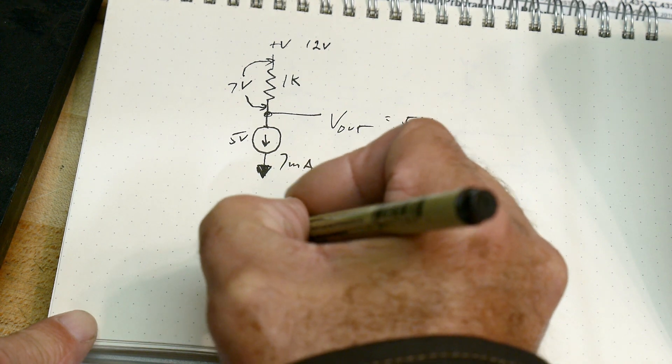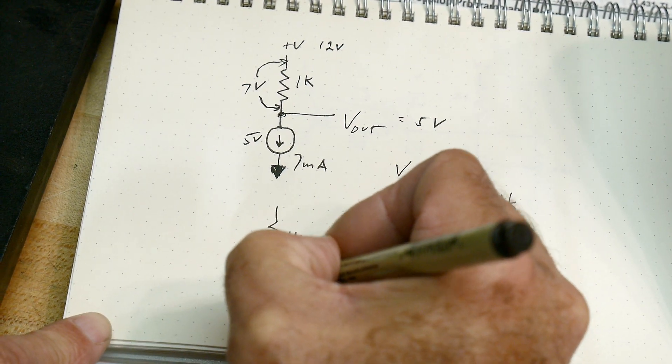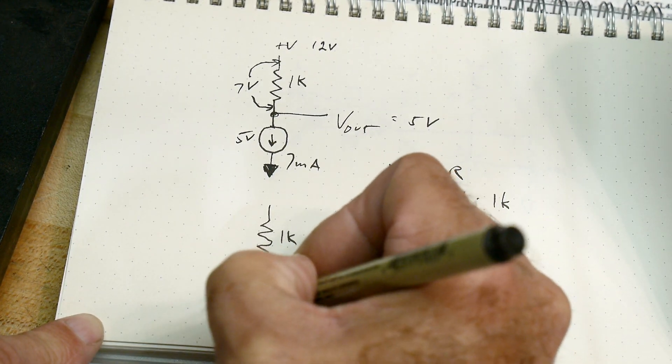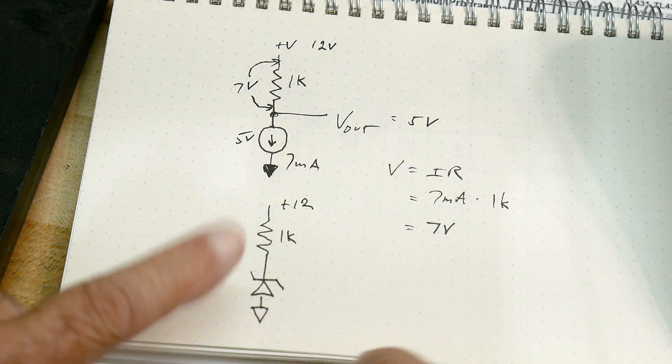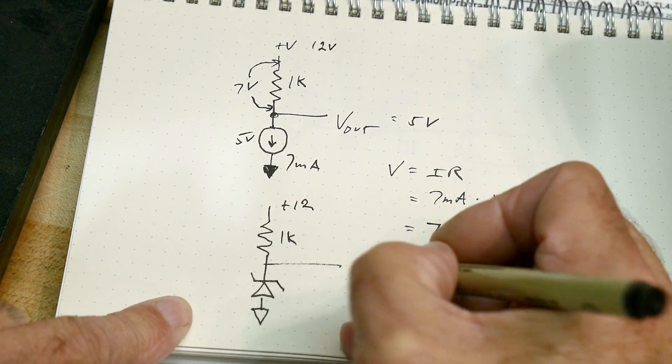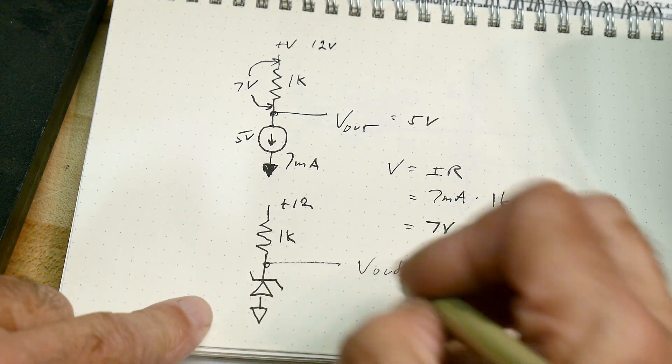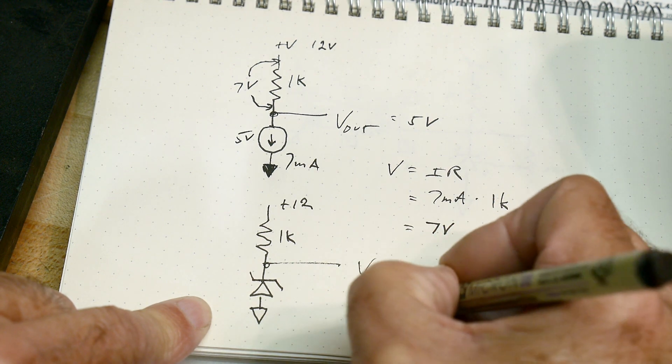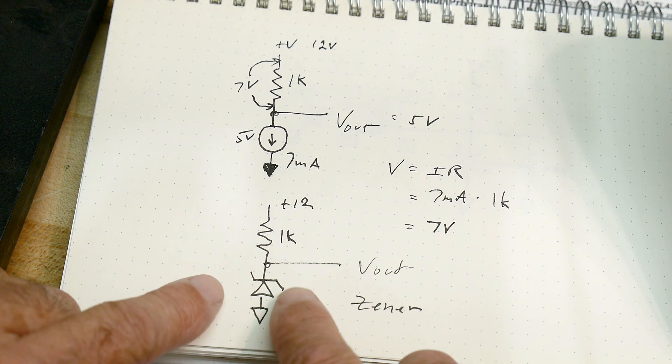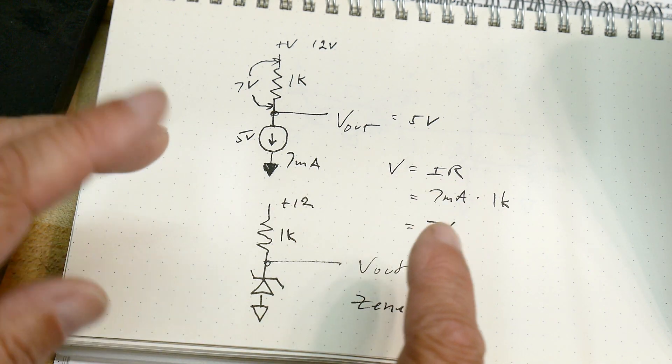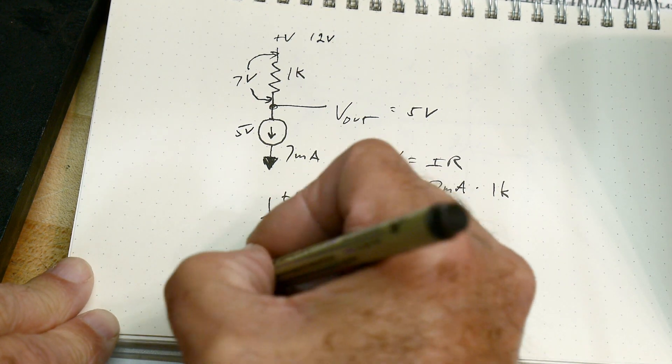Let's talk about another concept. Another concept would look like this. We have a 1k resistor and we have a strange diode. We have plus 12 volts here and we have V out. And these diodes are called zener diodes. And you get to choose voltages.